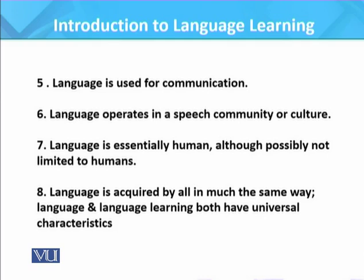Therefore, language is considered a social institution. Language is essentially human, although possibly not limited to humans. Human language has an acquisition process which makes it distinctive from animal language. Animal language is devoid of complexity, creativity, and novelty; it is unextendable and unmodifiable, whereas human language follows a systematic process of communication.